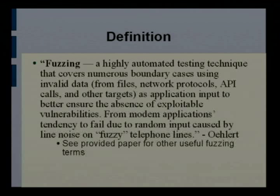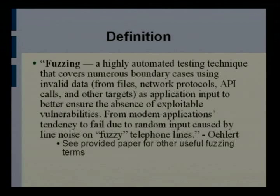For those of you who don't know what fuzzing means, it's basically an automated testing technique to find bugs in software. That's it. There's a lot of debate about what else exactly it means — maybe fuzzing is only random, maybe it's structured. Peter Ohlhart from Microsoft says: a highly automated testing technique that covers numerous boundary cases using invalid data from files, network protocols, API calls, and other targets as application input to better ensure the absence of exploitable vulnerabilities.